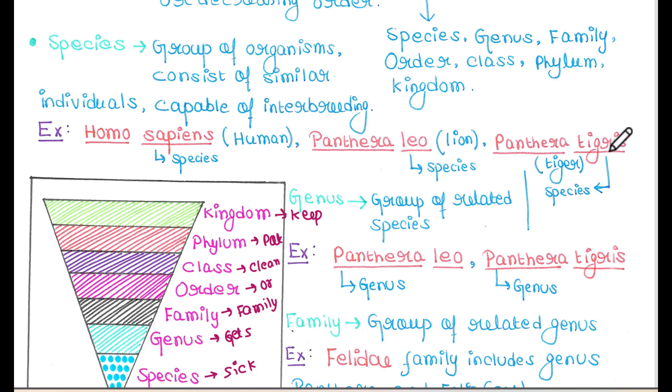Next is genus. A group of related species is called genus. For example, Panthera leo and Panthera tigris - here Panthera is the genus. This genus includes both lions and tigers.